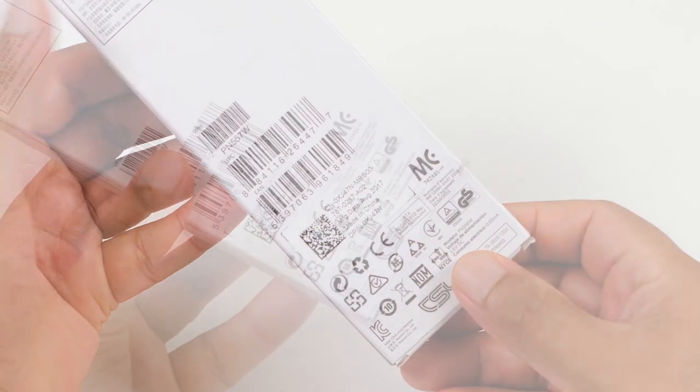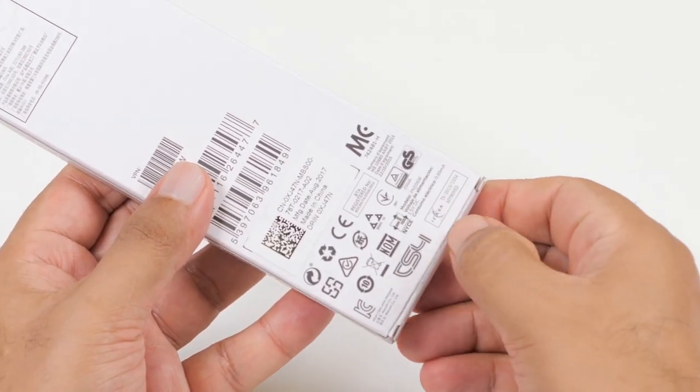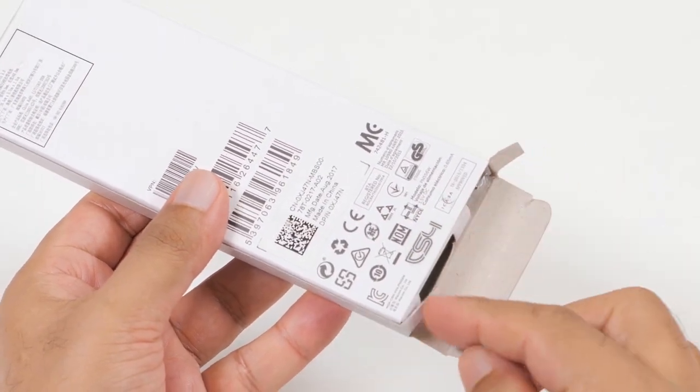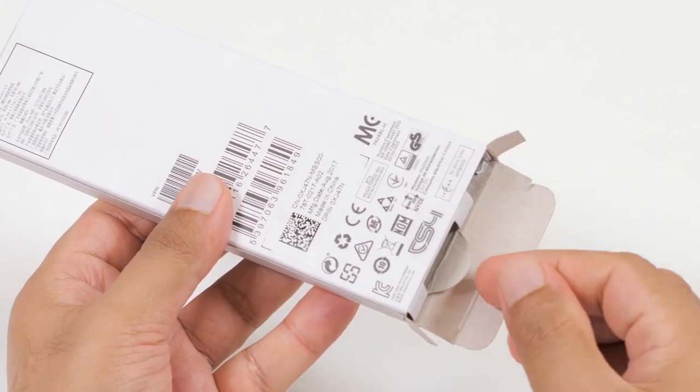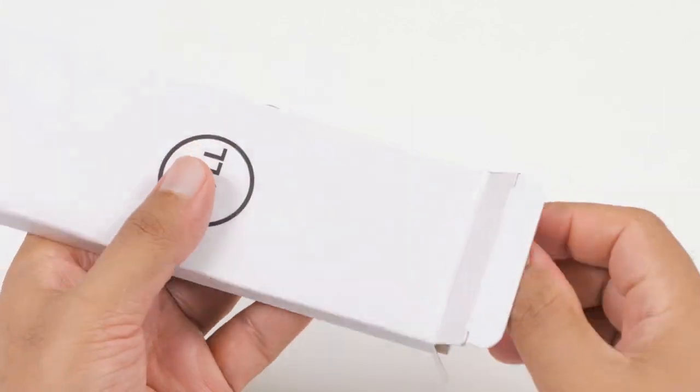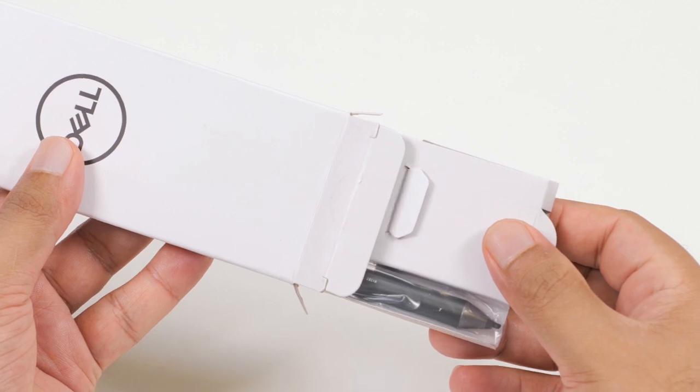Now, let's begin. First, cut the seal and open the box. Then, slide out the tray to access the Active Pen components and documents.